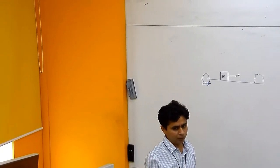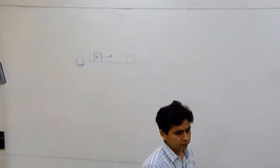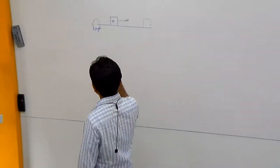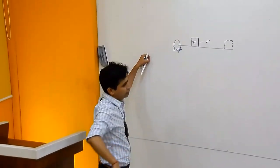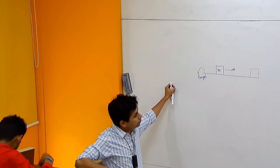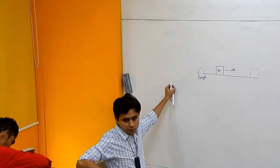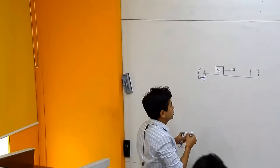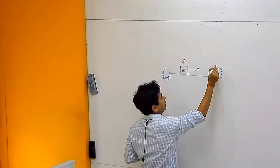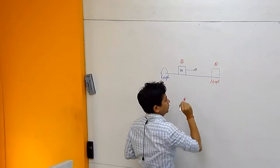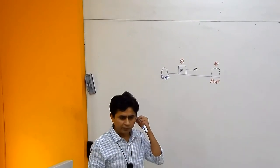I have a block and I give some initial velocity u to this block. Nothing is given like what is the friction coefficient. Simply, what is the work done by friction in going from A to B? You start from point A and go to point B, where this block stops. Somebody asks you what is the work done by the friction?